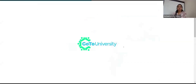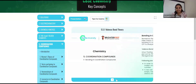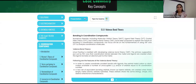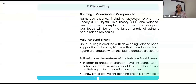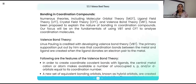Werner's theory is over because there are some limitations to it. Now we are moving to the next theory of coordination complexes, that is Valence Bond Theory. After Valence Bond Theory, there are different theories as well — Molecular Orbital Theory and Crystal Field Theory. The important theory regarding coordination complexes that we'll focus on now is Valence Bond Theory.